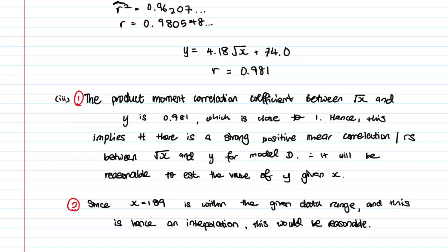That's all for this question on correlation and linear regression. The format is always the same: draw your scatter diagram, plot the values into your GC, find the r value, and work through the rest of the question. If you enjoyed the video, give it a like, subscribe to the channel, and leave any questions in the comments below.